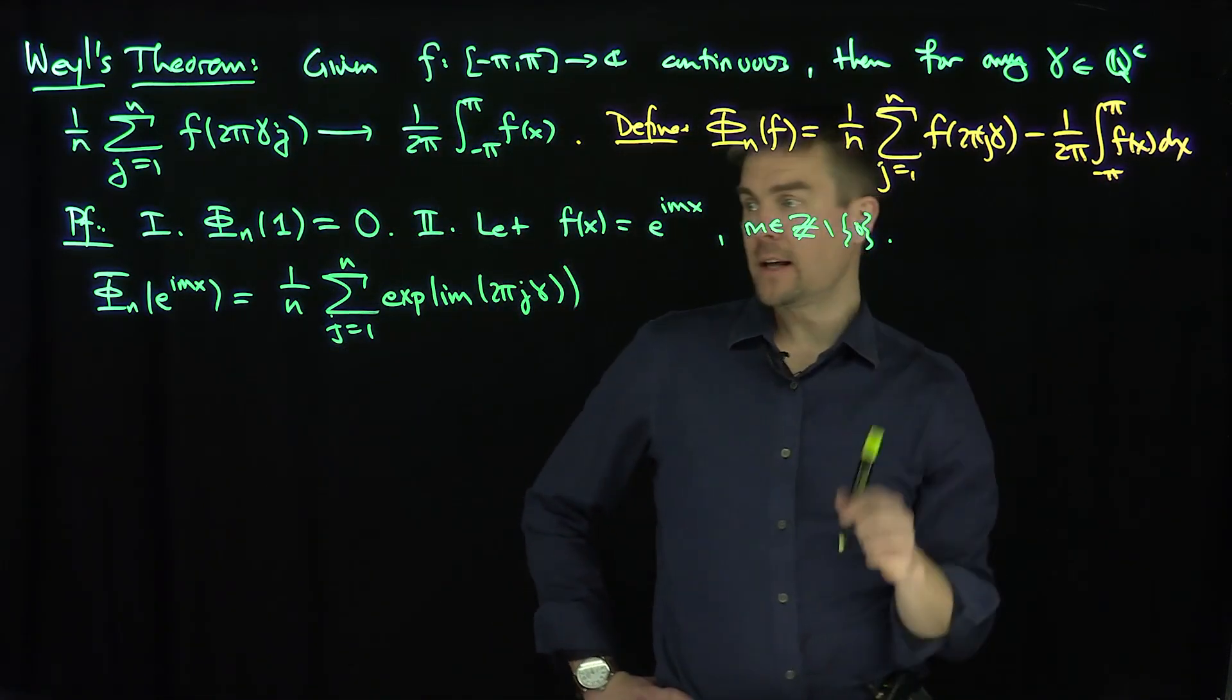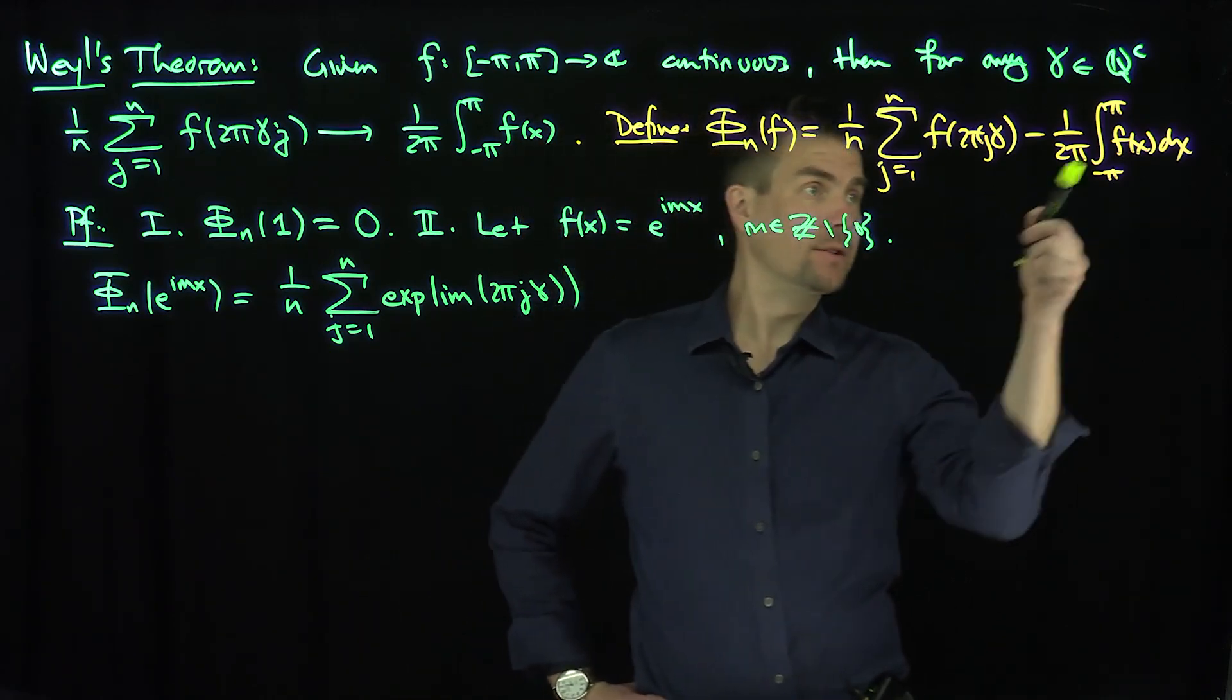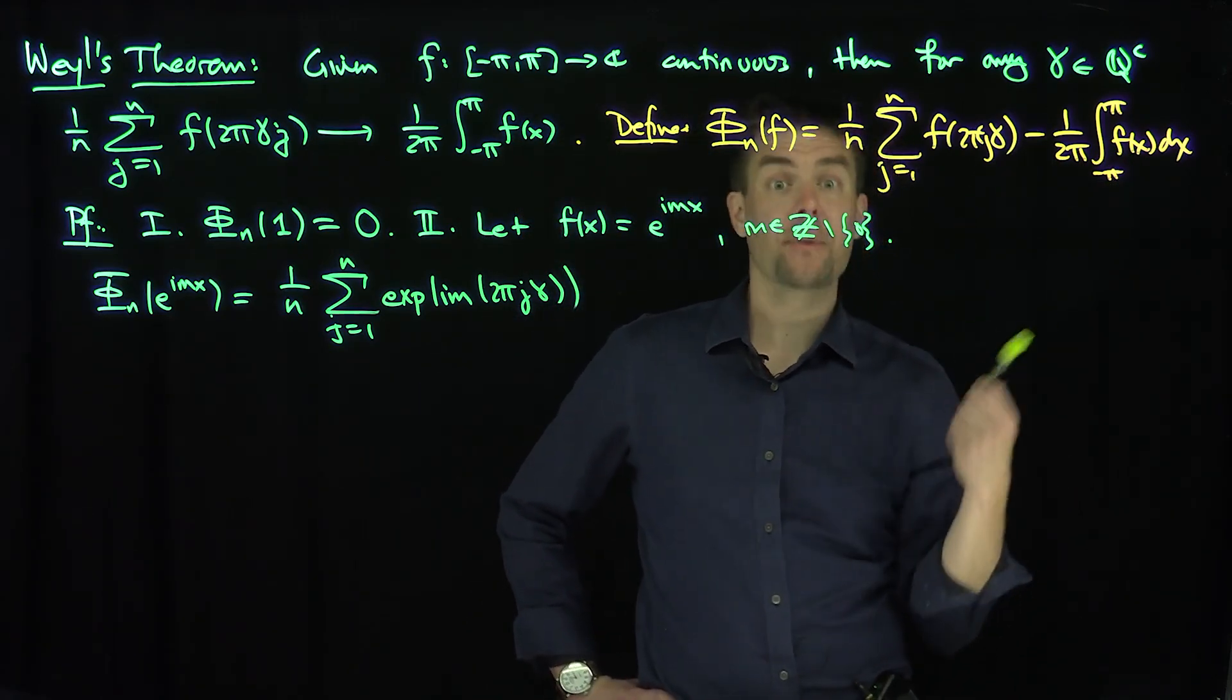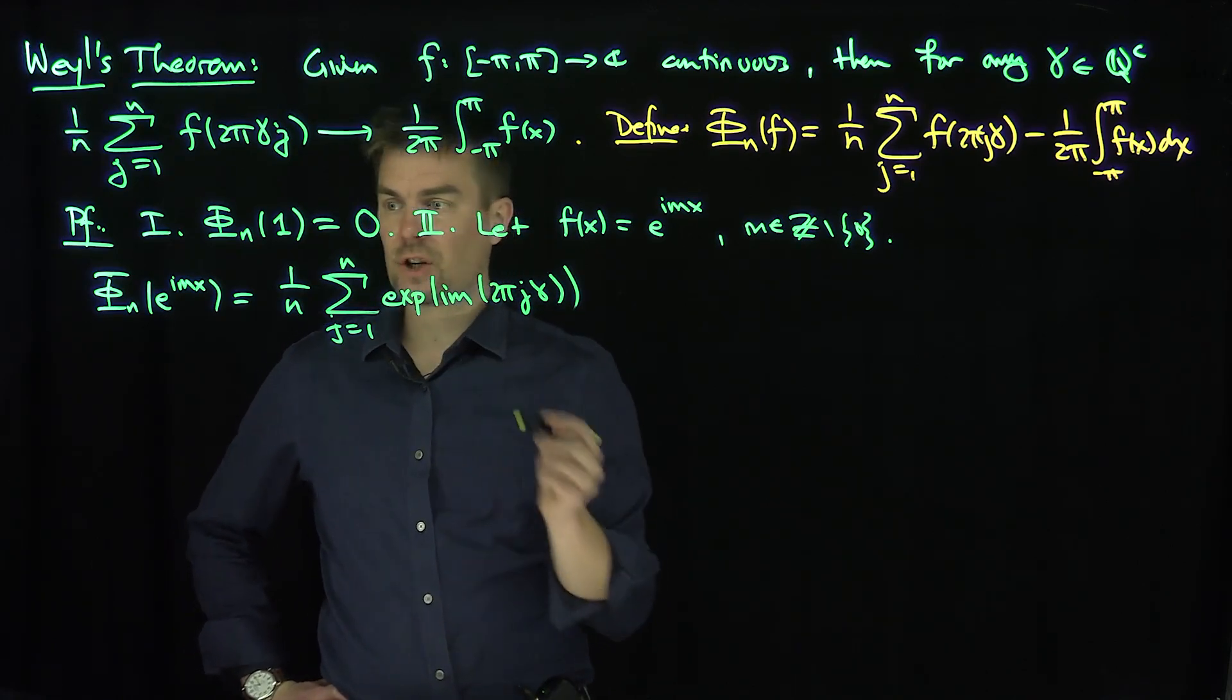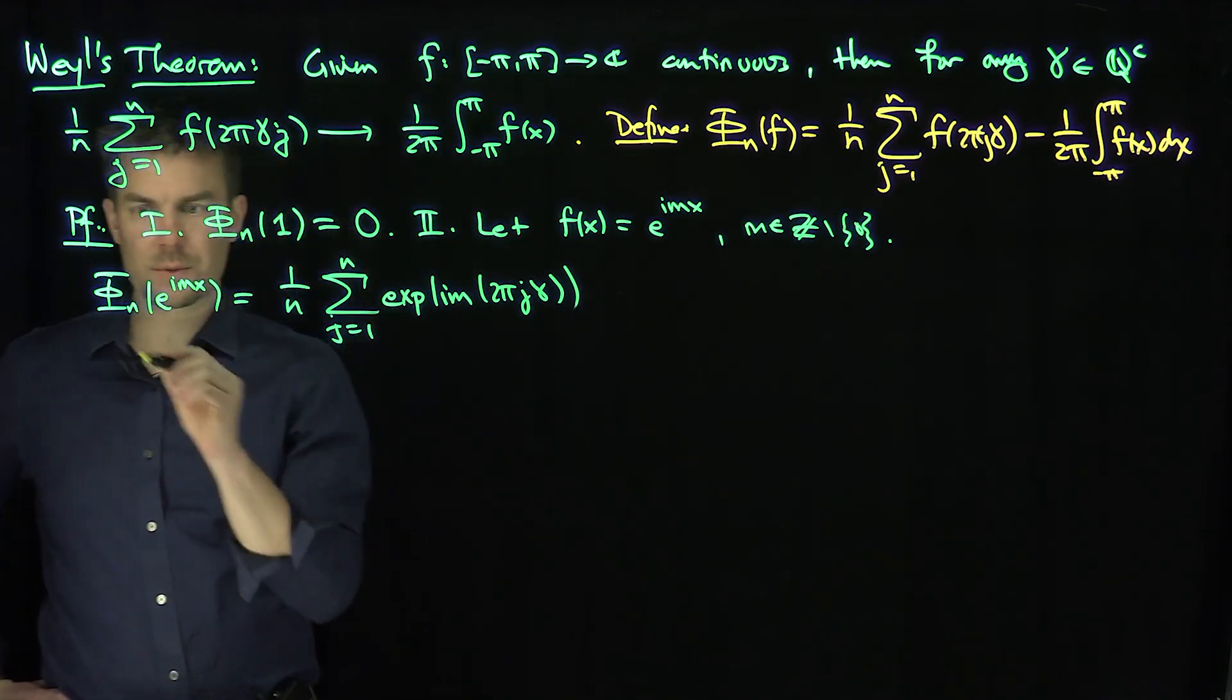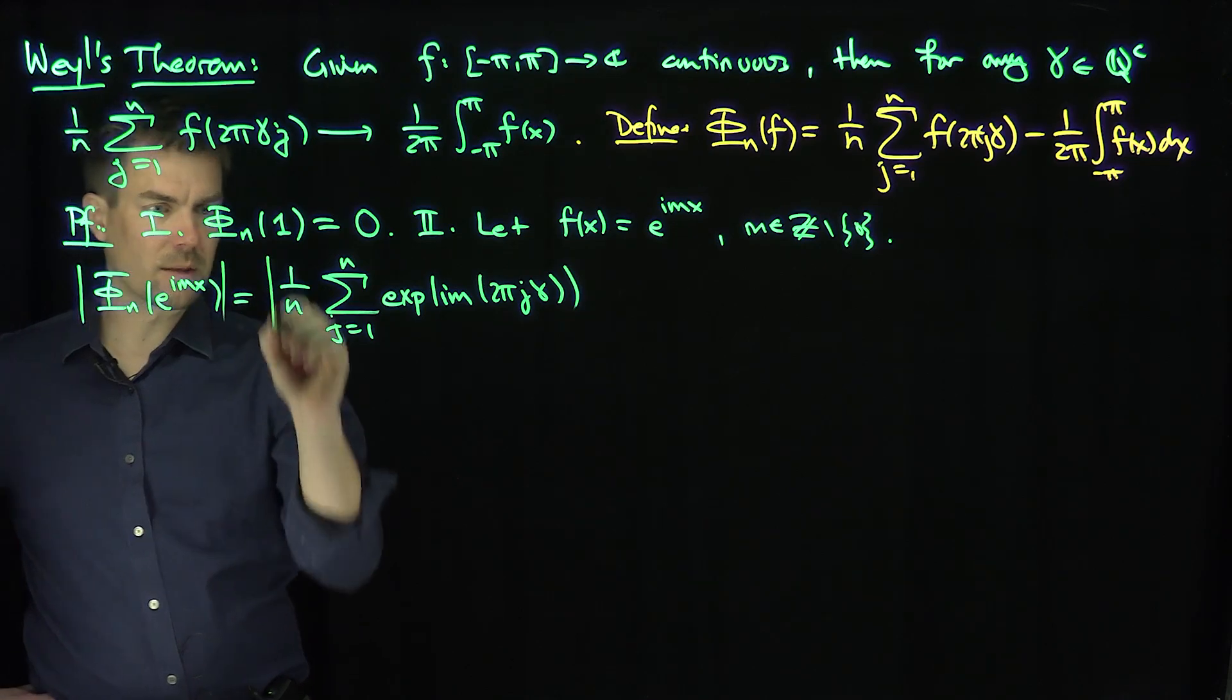And then, of course, when we integrate the e to the imx, when m is non-zero, from negative π to π, we get zero. We know that previously from previous videos. And so that's all we get for this. Now, this, of course, is a geometric progression. So, what we can do is estimate how large this thing can be.